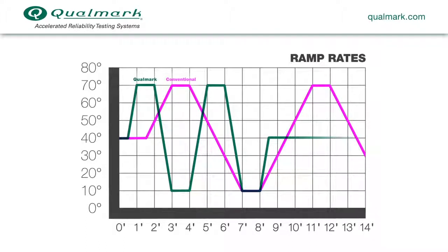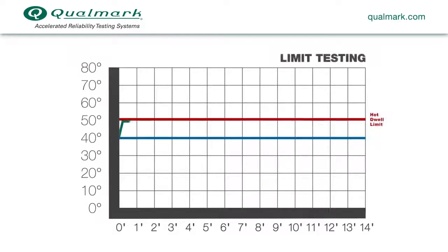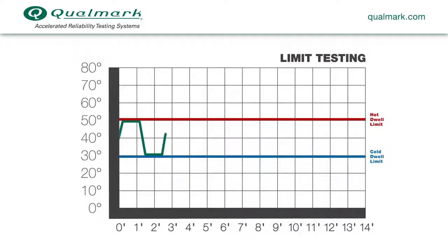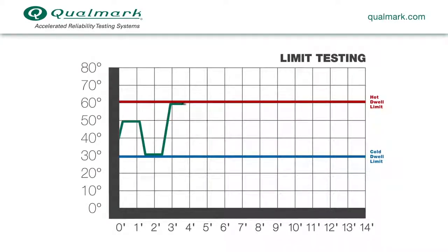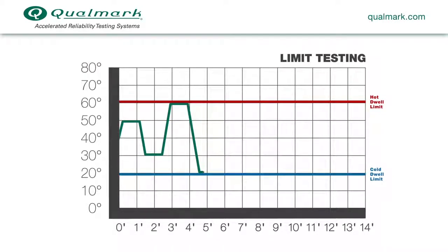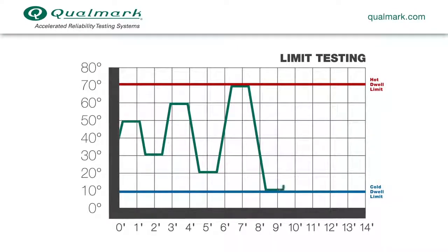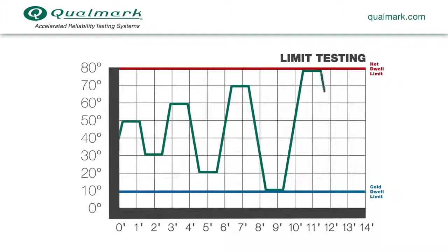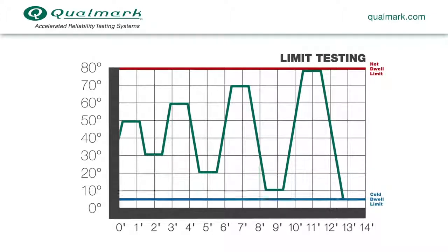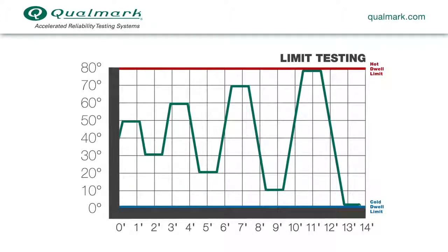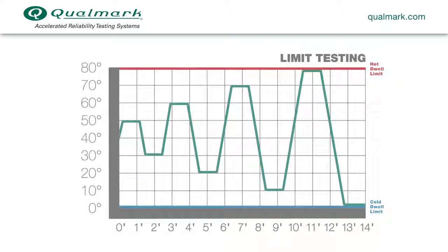Limit testing can be used to further accelerate ESS. By identifying and fixing product design issues, the temperature range between hot and cold dwells can be safely increased without causing hard fails. As a result, each temperature cycle induces relatively more thermal stress, which again saves screen time.